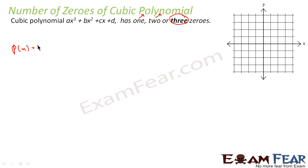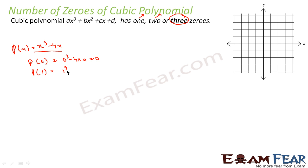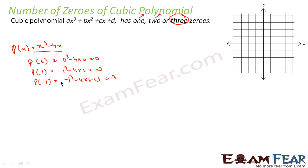Let's take p(x) = x³ - 4x and draw the graph. So p(0) = 0³ - 4×0 = 0. p(1) = 1³ - 4×1 = 1 - 4 = -3. p(-1) = (-1)³ - 4×(-1) = -1 + 4 = 3.